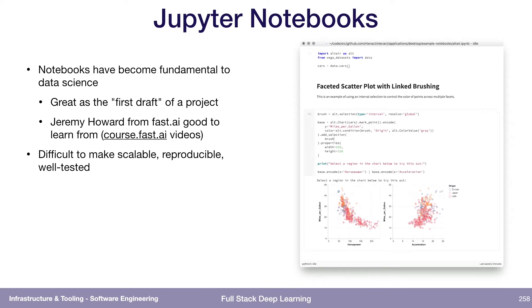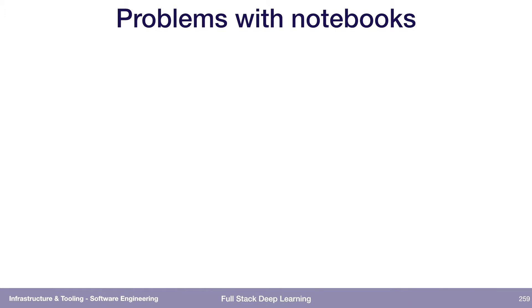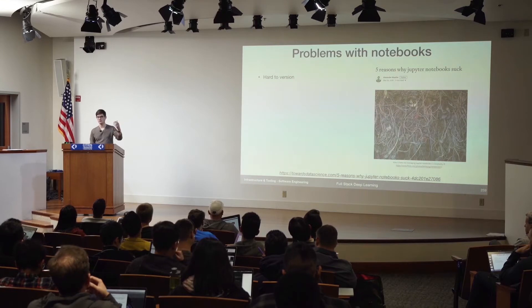It's super difficult to test the stuff you write in a notebook. A counterpoint is that Netflix reportedly based their entire ML infrastructure on notebooks — everything has to run as a notebook — but the complexity of that diagram speaks to the feeling that it's not worth it. Notebooks are hard to version, partly because they mix output with input — the code you write and the results that get generated. Version control treats them as the same thing. There are ways around it that basically only check in your code but not the results, but sometimes the result is actually what you want to check in.